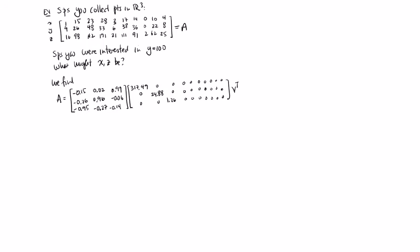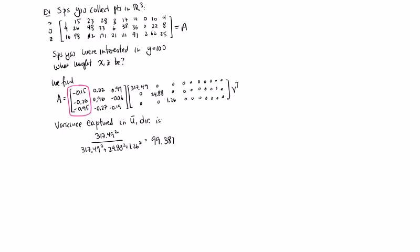What we see here is really interesting. If we look at the total variance captured just in the U1 direction — that very first direction — that's 317.49 squared over the sum of all those variances. If you do this, this is 99.3879%.